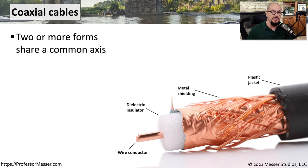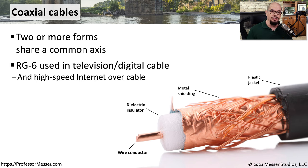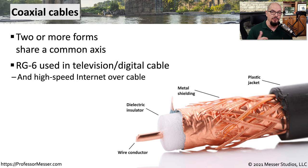Not all cable connections are twisted pair. Sometimes you may be using coaxial cable. Coaxial means that you have two or more forms using the same axis, and in this case it is a single wire conductor used in the coax cable. This is commonly the coax cable we would use for cable modem connectivity. If you look at the coax used inside of your home, it's probably labeled RG6 or a similar type of coax. This is what we normally use for television, digital cable connectivity, and digital internet connections.